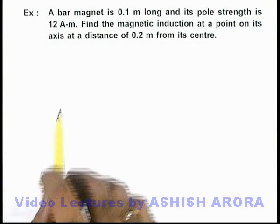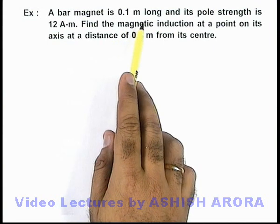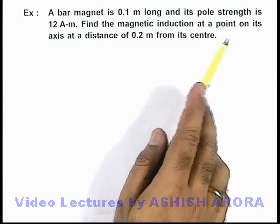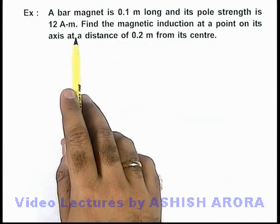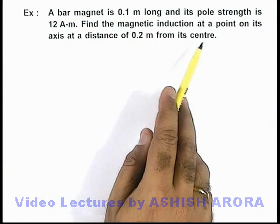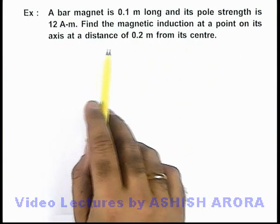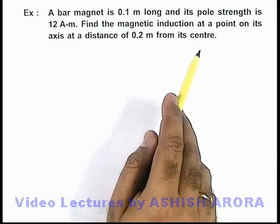In this example we are given that a bar magnet is 0.1 meter long and its pole strength is 12 ampere meter. We are required to find the magnetic induction at a point on its axis at a distance of 0.2 meter from its center.